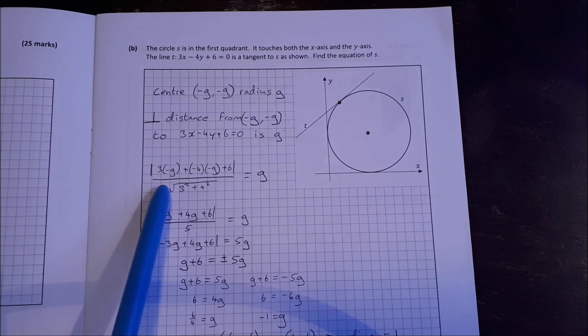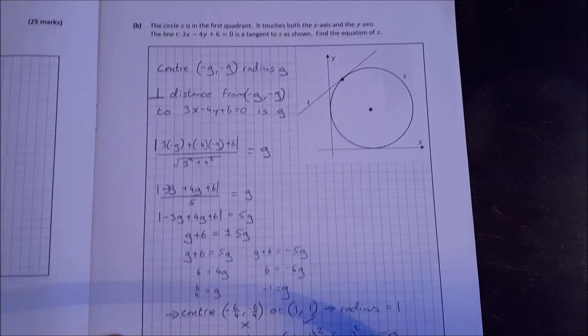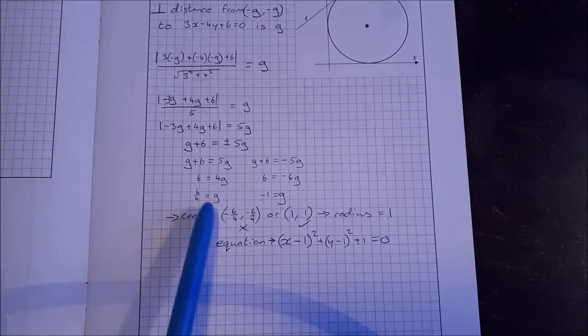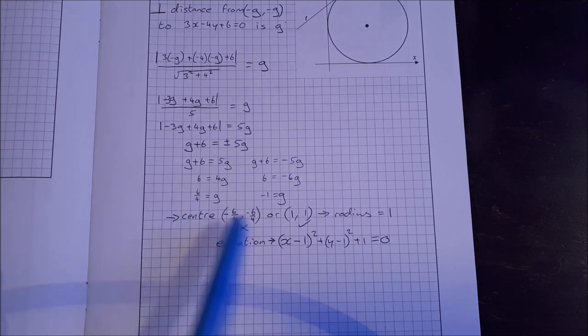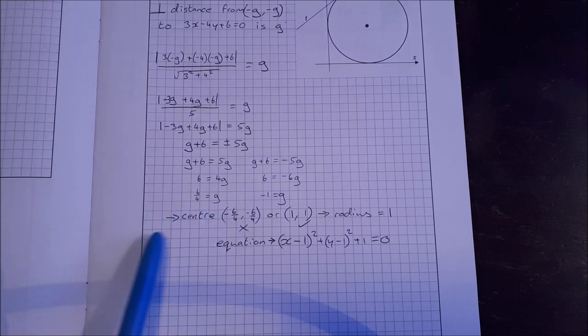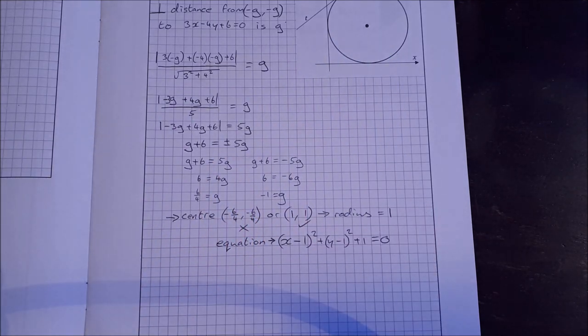So we use the perpendicular distance formula, subbing in everything we know and letting it equal to G. If we work down through the algebra here, we end up getting G is equal to 6 over 4 and G is equal to minus 1. Well, we have a look. If G is 6 over 4, that means the centre is minus 6 over 4, 6 over 4. That can't be true because we know it's in the first quadrant. If G is minus 1, that means the centre is 1, 1 and the radius is 1. That does work in the first quadrant.